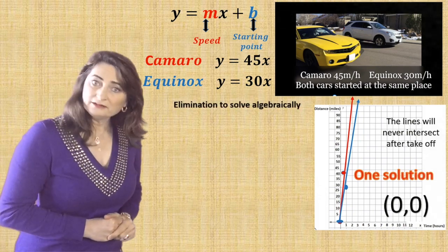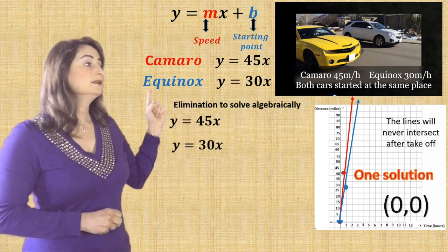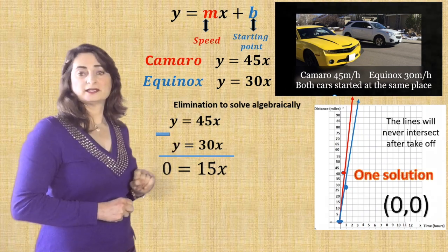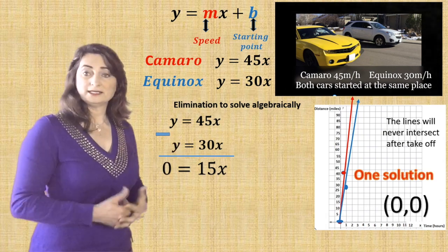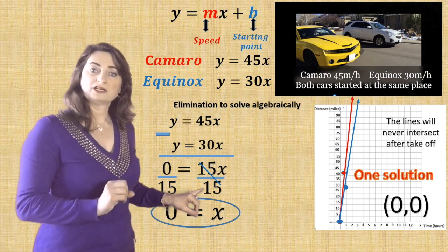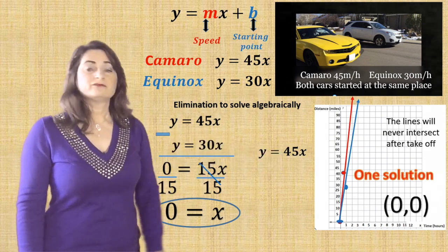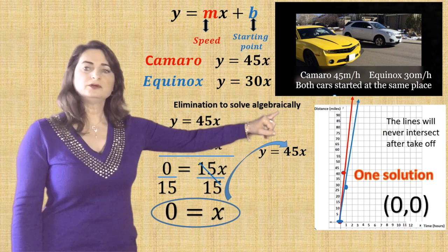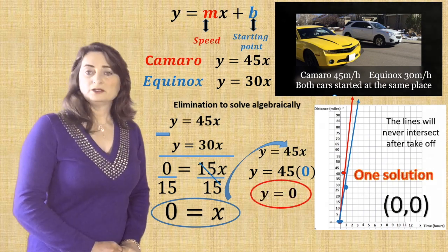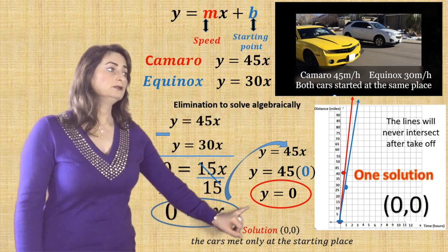Now let's prove it algebraically using elimination. Write both equations — since they are already lined up, y under y and x under x. They have the same sign, so subtract. Y minus y is 0; 45x minus 30x is 15x. Isolate x by dividing both sides by 15: x equals 0, so that's 0 hours. To find the distance, choose one equation — y equals 45x — and substitute x equals 0: y equals 45 times 0, which gives y equals 0. The solution is (0, 0), meaning the cars met only at the starting place.